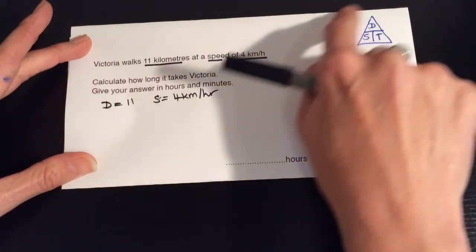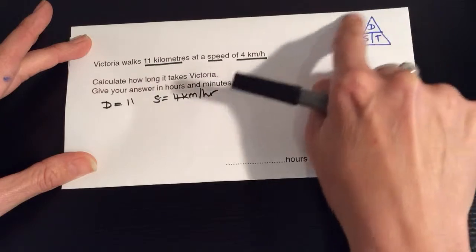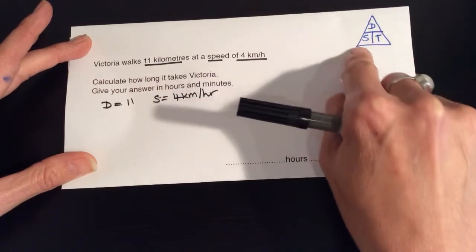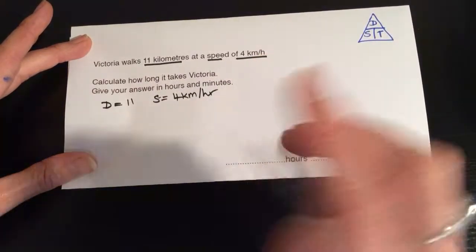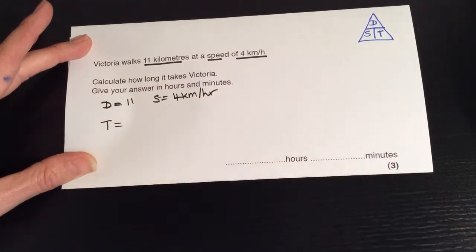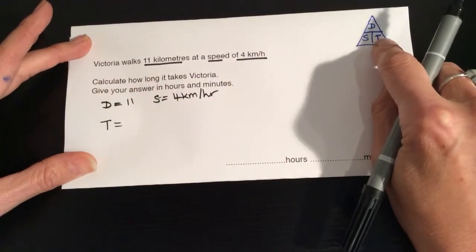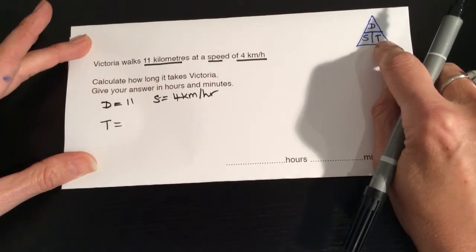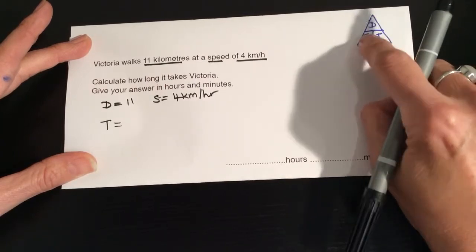So lots of pupils learn this triangle to help calculate distance time calculations. Now we need the time. If we have the time and, sorry, if we want the time and we have the distance and the speed,